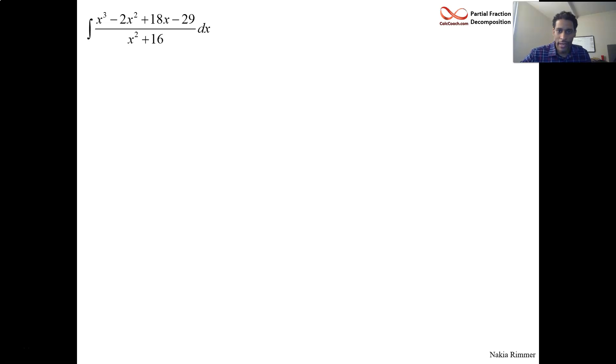Okay, this is the fourth and final example from the partial fraction decompositions lecture. We have this rational function which is a cubic in the numerator and a quadratic in the denominator. The very first step of this technique is to check the degree of the numerator versus the degree of the denominator.